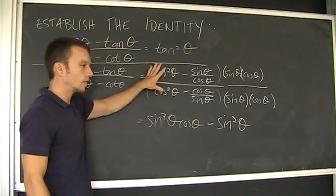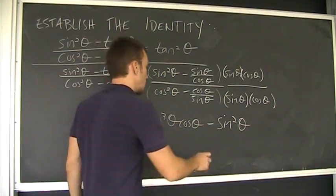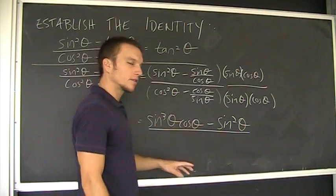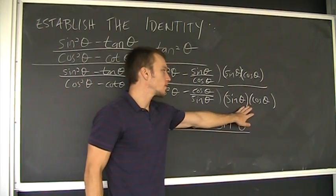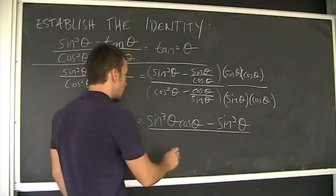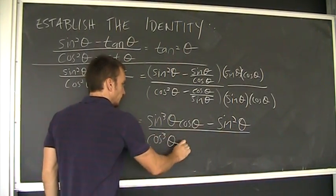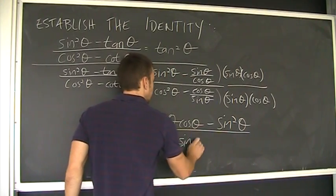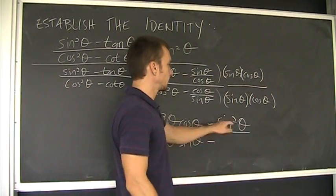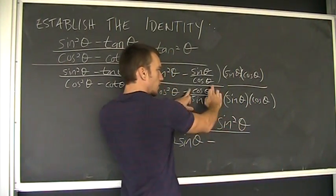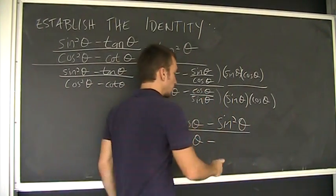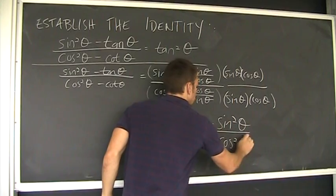That's the numerator of this fraction. Do the same in the denominator, and I'll get something that looks similar. Sine theta cosine theta times that will be cosine cubed theta times sine theta minus, what do I get with this product times this quotient? Well, your sines will cancel and you get cosine squared.